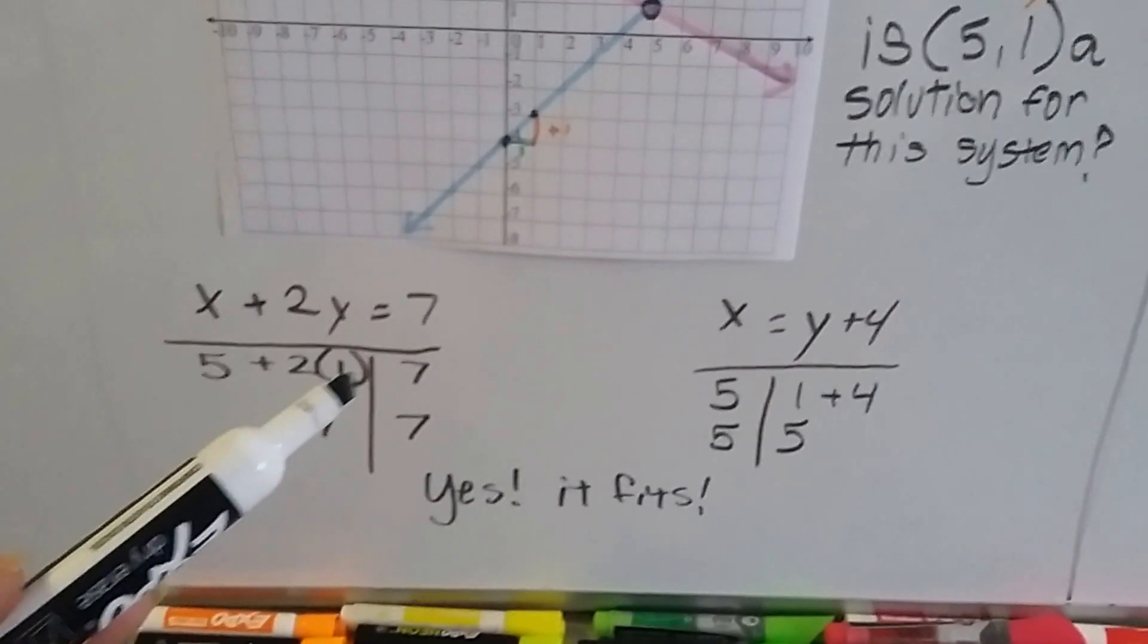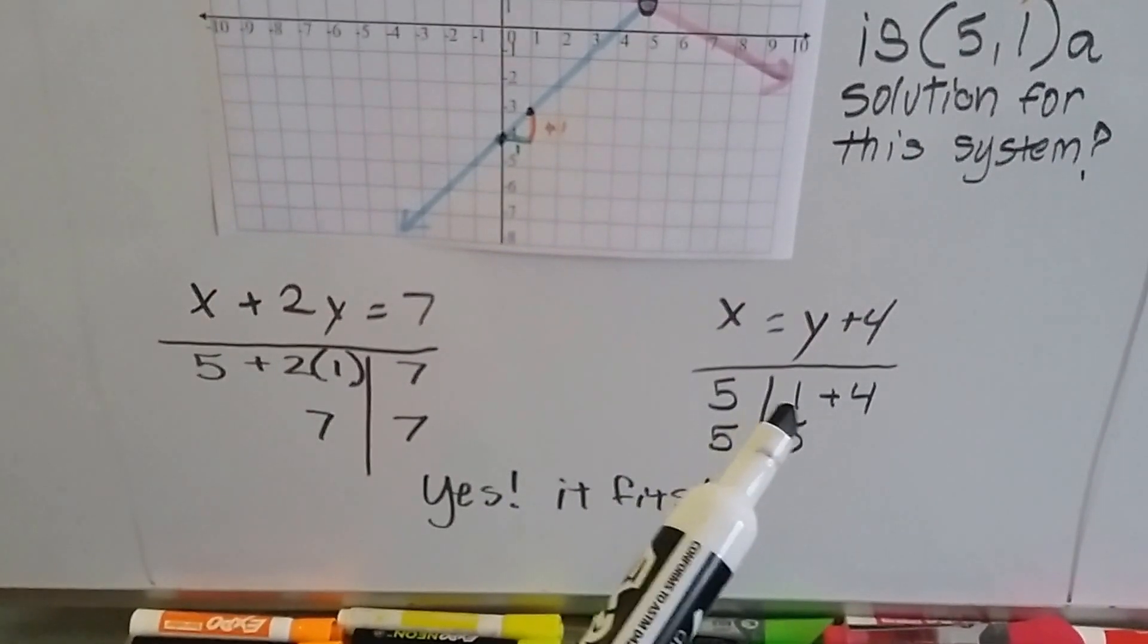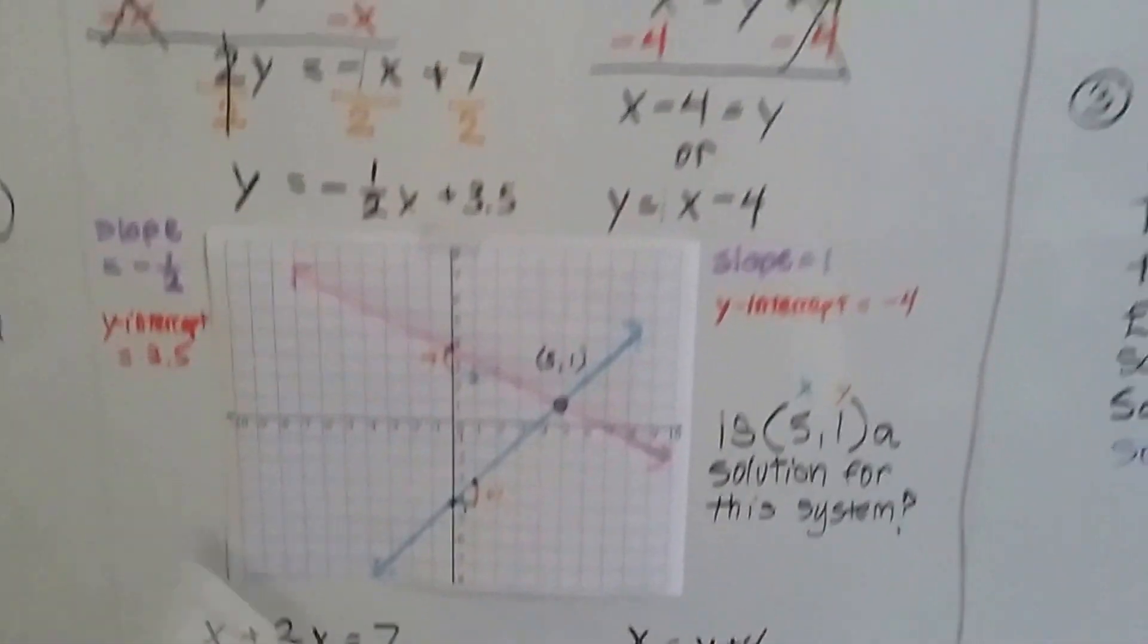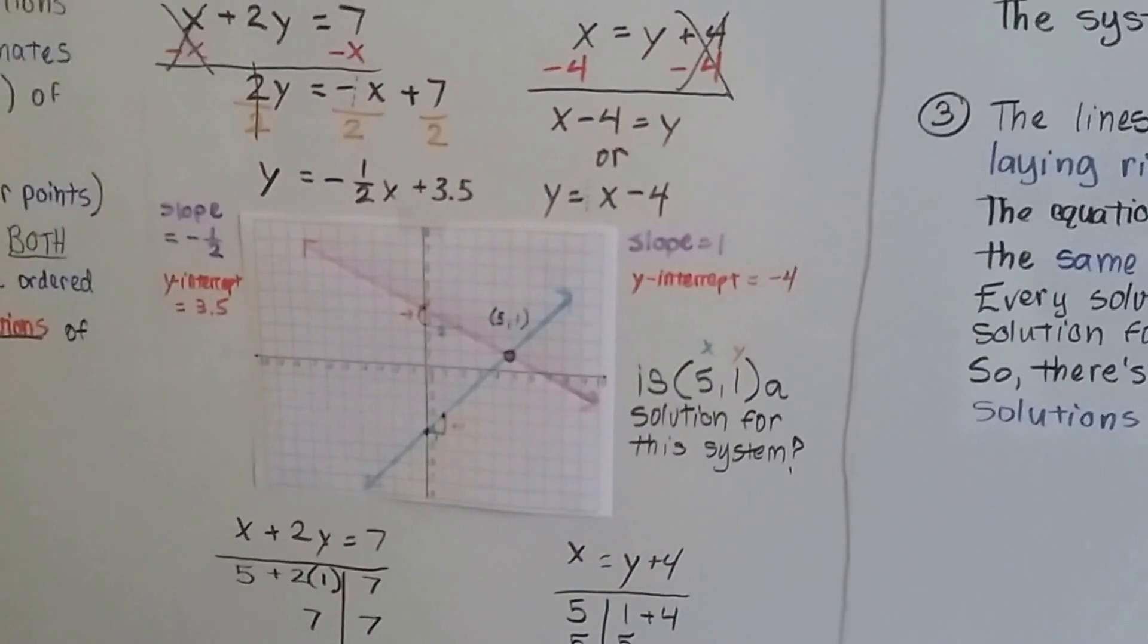Because 5 plus 2 times 1 is 7. And 5 is equal to 1 plus 4. So yeah, it fits. It's a solution. See how we had to put them in slope-intercept form first? I hope you followed how I did that.